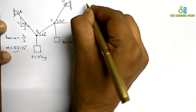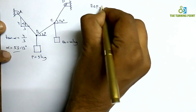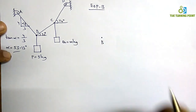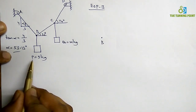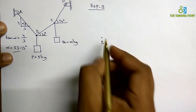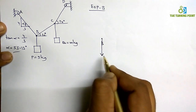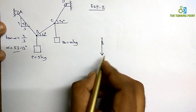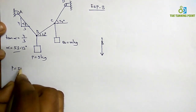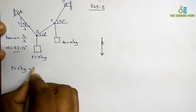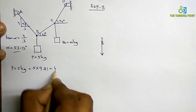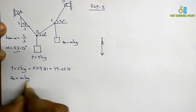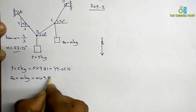Now I will consider equilibrium of point B and draw the free body diagram. At point B, a weight of 5 kg acts vertically downwards. Mass won't act directly — this is the weight. P is given as 5 kg; converting to Newtons: 5 × 9.81 = 49.05 N. Similarly, Q is given as m kg, so its weight is m × 9.81 = 9.81m Newtons.